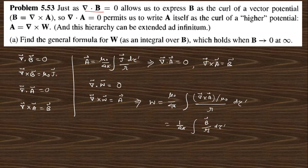For question 5.53: divergence of B equals zero and curl of B equals mu-naught J. By comparison, you can write the magnetic vector potential A in a matching form. Setting divergence of W equal to zero and curl of W equal to A, and comparing these two equations, we can write down W. Using this approach, W equals (mu-naught / 4 pi) times an integral of J — where J equals curl of B over mu-naught — and since curl of A equals B, this gives the result.